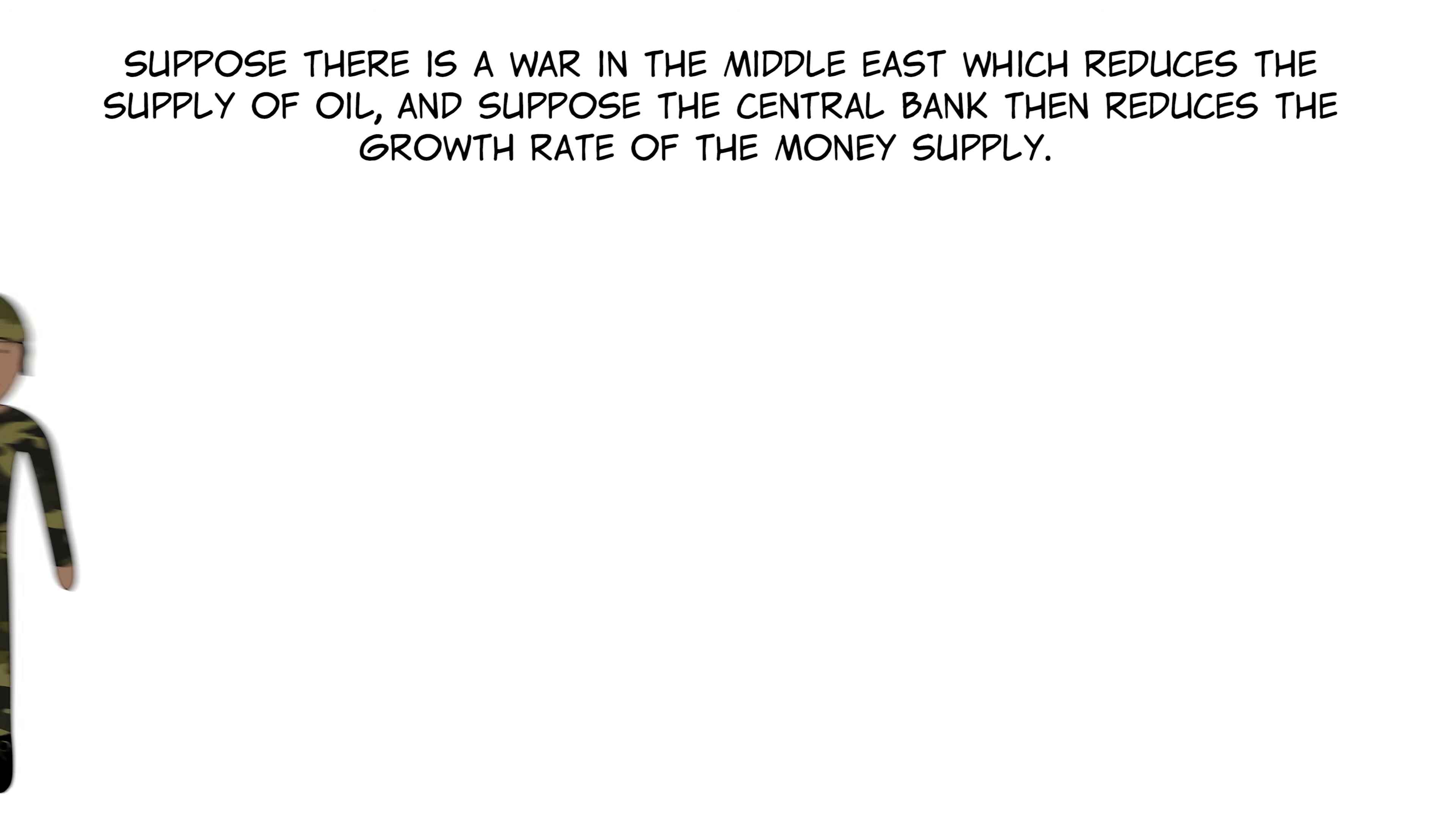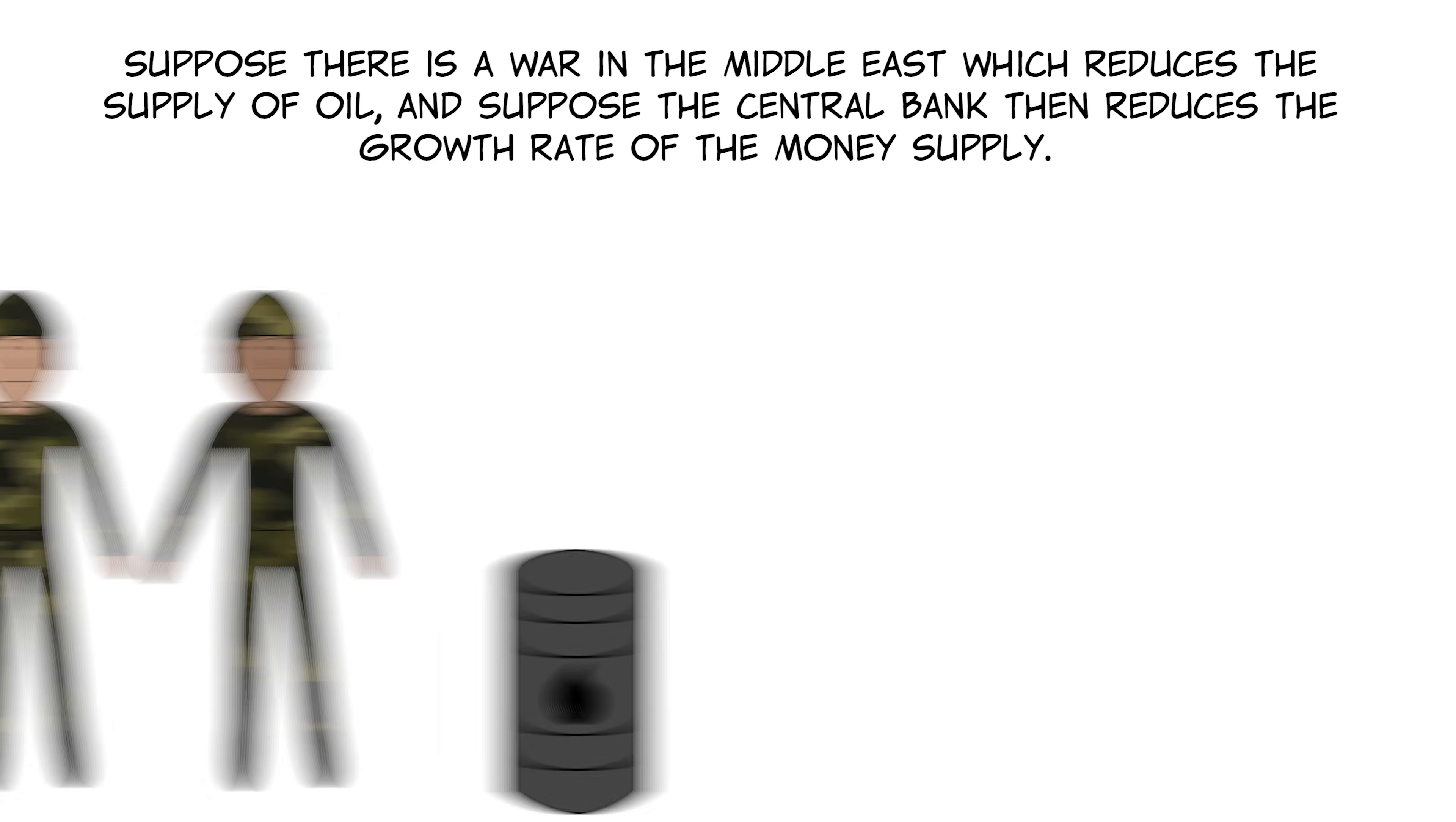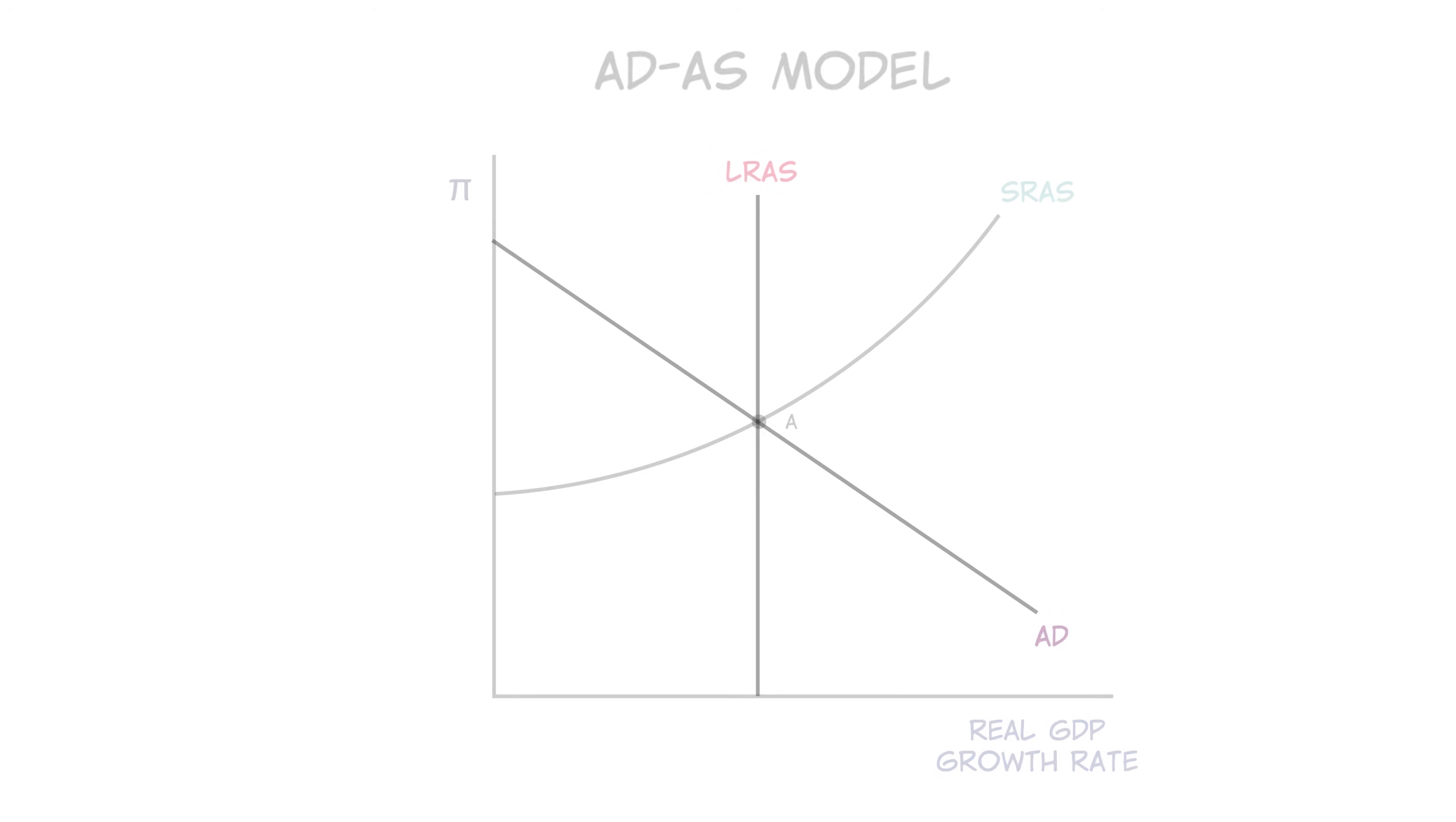And finally, let's try one more scenario. Suppose there is a war in the Middle East which reduces the supply of oil, and for reasons that we'll get into, we'll also suppose that the central bank then reduces the growth rate of the money supply. Resetting the graph one last time, oil is an important input into the production of many goods and services in an economy. So when the supply decreases, prices go up rapidly,